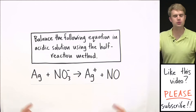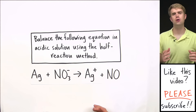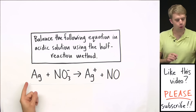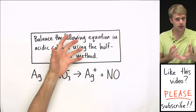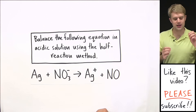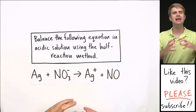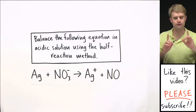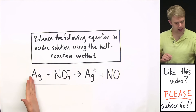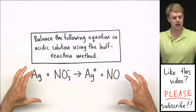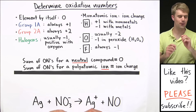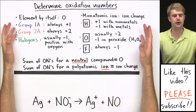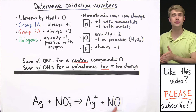Here's where we start. This is a redox equation, which means that there's oxidation and reduction going on. We want to know which elements are getting oxidized and which are getting reduced. We can figure this out by looking at changes in the oxidation numbers for these elements. So the first thing we're going to do is assign oxidation numbers to each of the atoms in this equation. Our first step is to determine oxidation numbers. These are the rules that we're going to use to figure out the oxidation numbers for the elements in this equation.